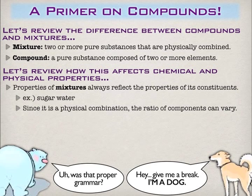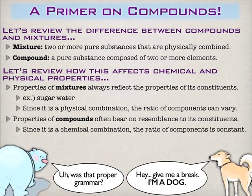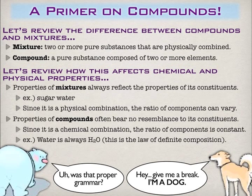And since it's a physical combination, the ratio can vary — you might have just a little bit of sugar in your water or a lot. Compounds, on the other hand, often bear no resemblance to their constituents, and we have a set ratio as defined by the law of definite composition. So when you form water in the laboratory, it's always going to be H₂O. You can't have H₃O or H₄O like you could with a mixture.